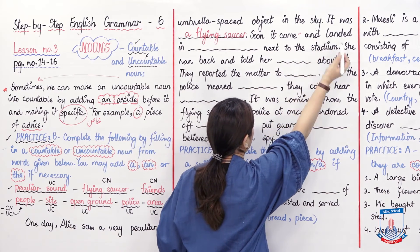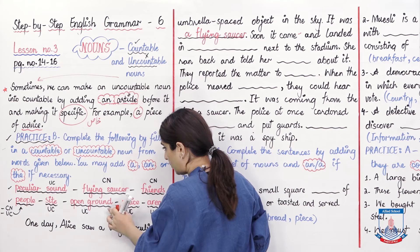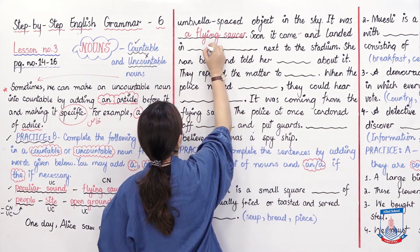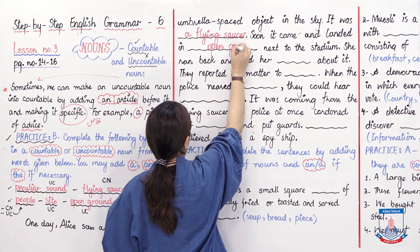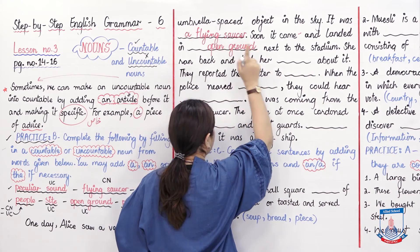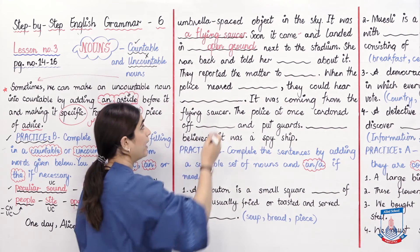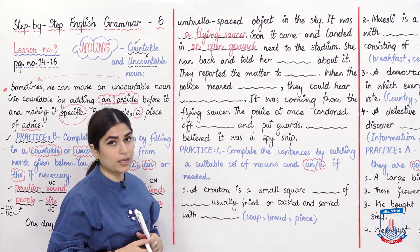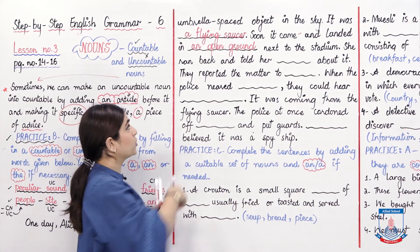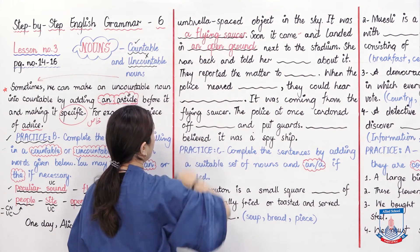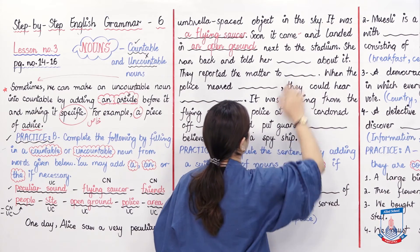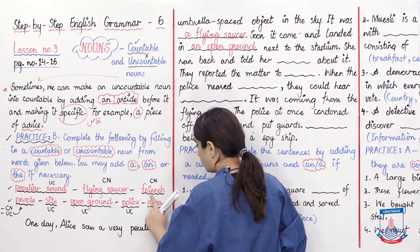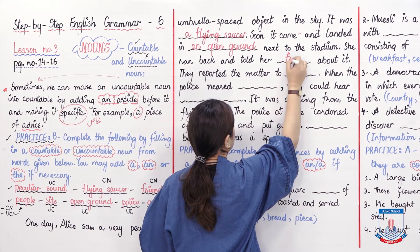'Soon it came and landed in' — here we write 'open ground.' Since there is one open ground, and 'open' starts with a vowel sound, we write 'an open ground.' Next to the stadium, she ran back and told her — 'friends' — about it. No article is needed before 'friends' here.